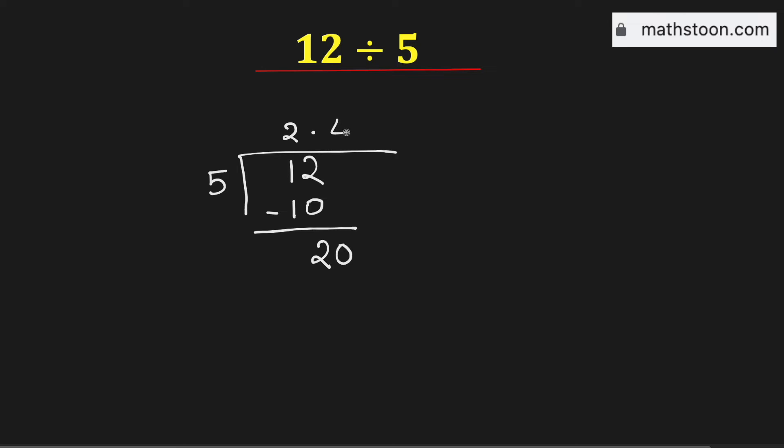And we know that 5 times 4 is 20. So when we subtract we get 0.